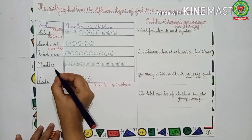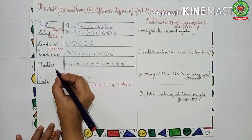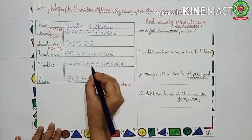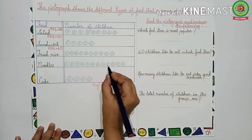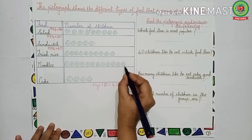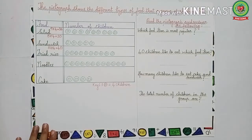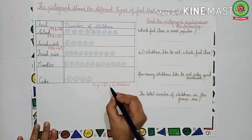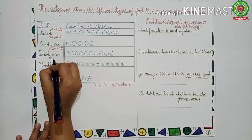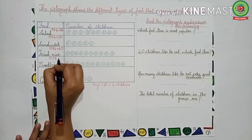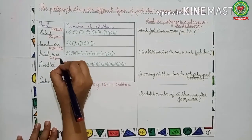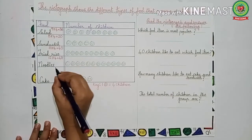Next is noodles. Let us count the smiley faces: twelve smiley faces. We know one smiley face is equal to four children, so we have to multiply twelve by four. Twelve fours are 48. That means 48 children like noodles.